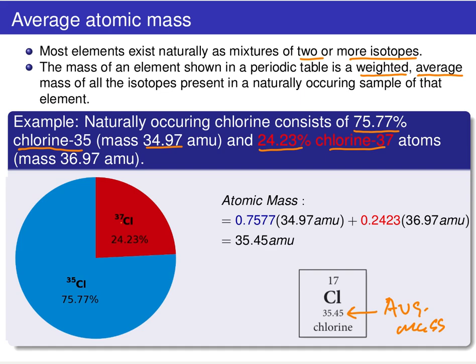To figure out the atomic mass of chlorine, all you have to do is take the atomic mass of each isotope — those are the isotope masses. We are going to add them together, but we're going to weight them by the fractional abundance. The fractional abundance comes from that percent abundance divided by 100.